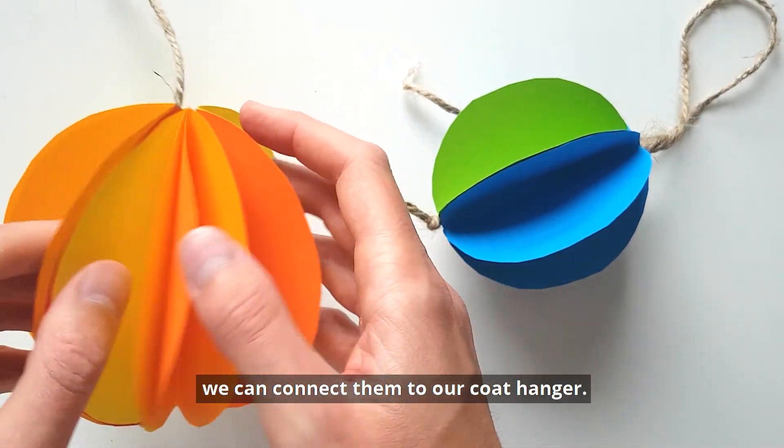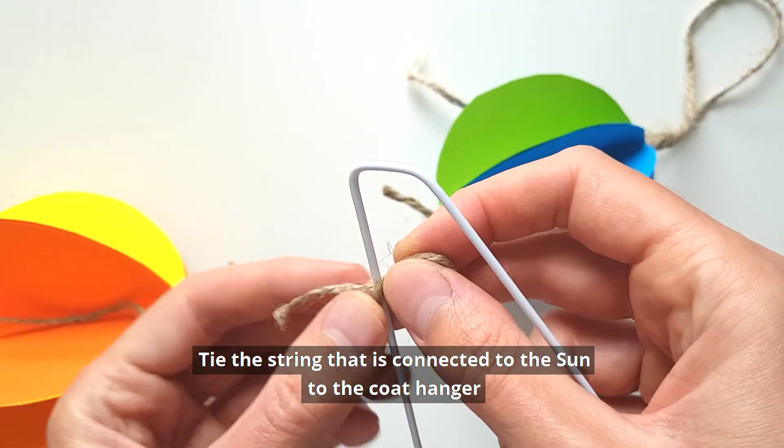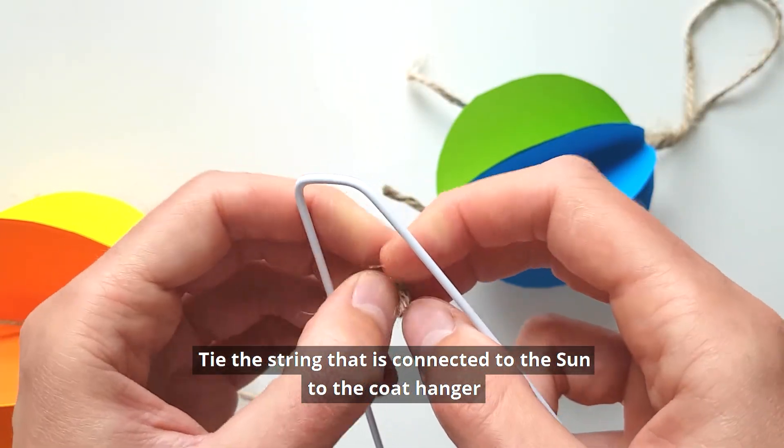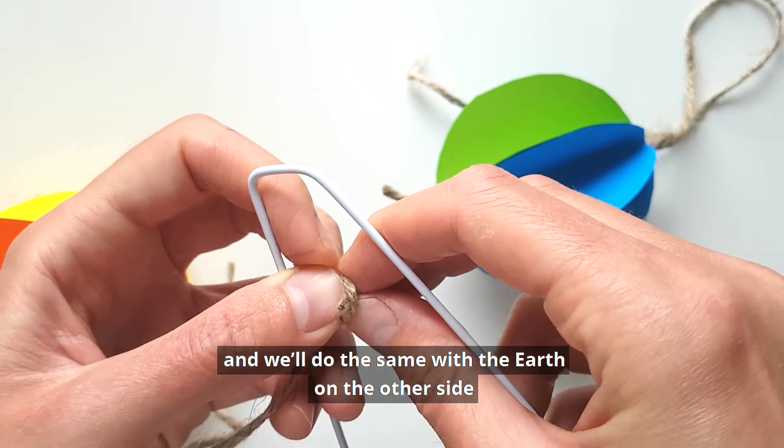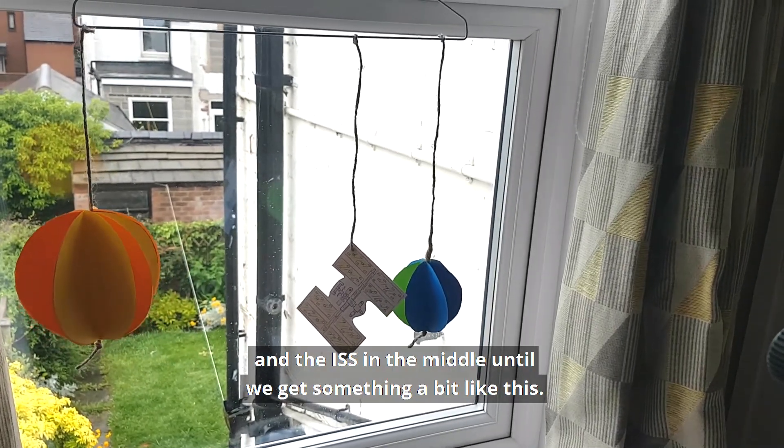Now we have our Sun and Earth, we can connect them to the coat hanger. We'll tie the string that's connected to the Sun to the coat hanger, and we'll do the same with the Earth on the other side and the ISS in the middle, until we get something a bit like this.